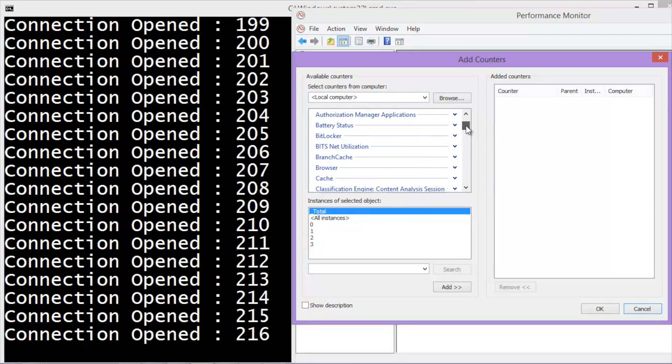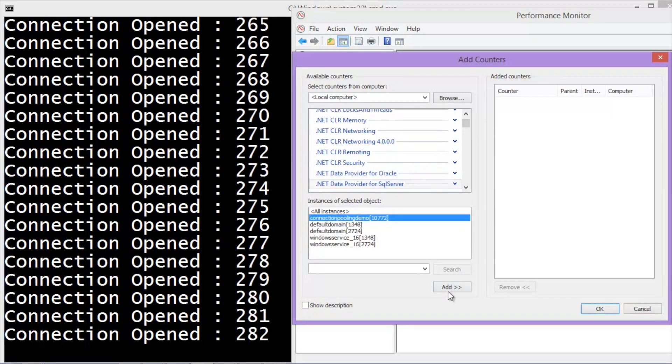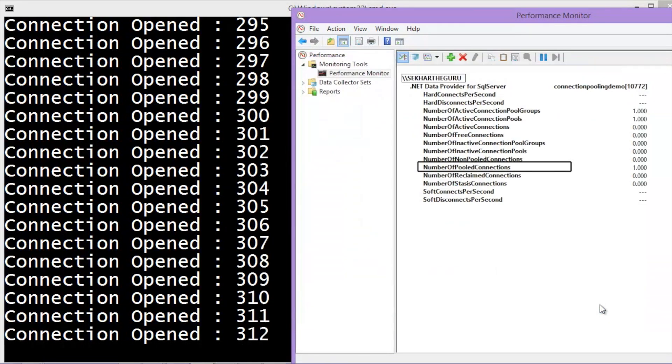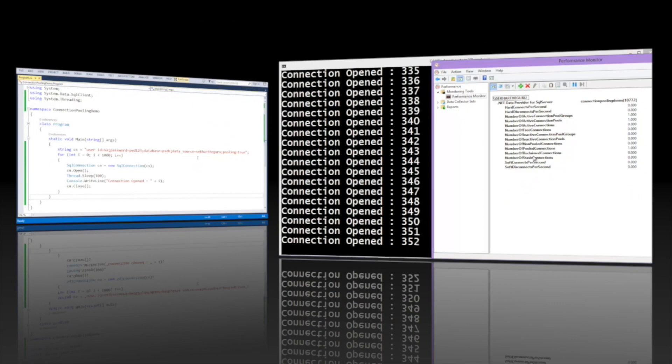Let me add our console application to the performance monitor. We can observe the number of pooled connections which are active. Now let me flip to Visual Studio.NET and update the connection string by disabling the pooling explicitly.